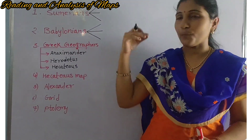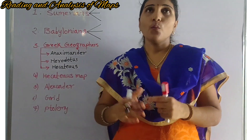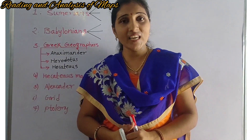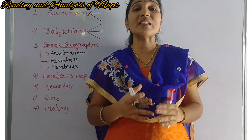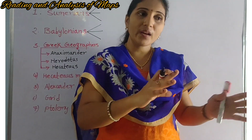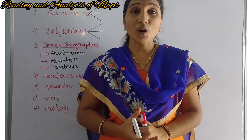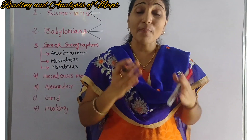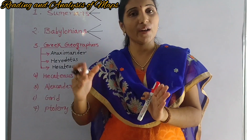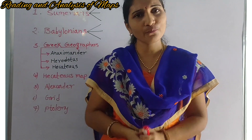Now coming to the topic. So here, the definition of a map. What is a map? A map is a pictorial representation of a place on a piece of paper.